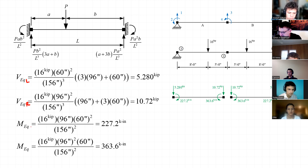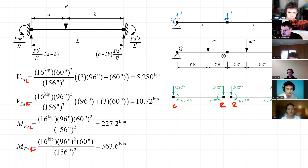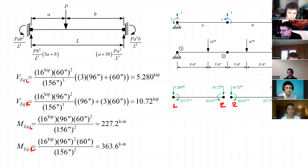When we figure out the equivalent end actions for the distributed load, it's the same as what we had for the first version. We end up with end shears of 7.8 kips and equivalent end moments of 202.8 kip-inches due to the distributed load. For the live loads, this gets to be just a little bit trickier because the live loads aren't in the center of our elements — they're offset a foot and a half to the right of center. So we calculate equivalent shears of 5.28 kips and 10.72 kips, and then equivalent moments of 227.2 and 363.6 kip-inches. That's kind of an in-between solution — it gives you the worst of both worlds: a larger stiffness matrix and more work on equivalent end actions.